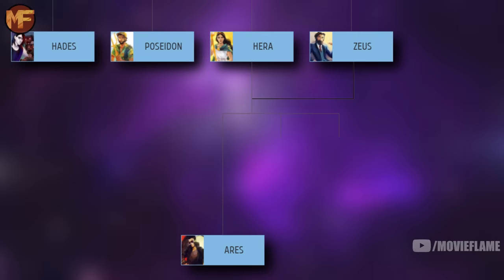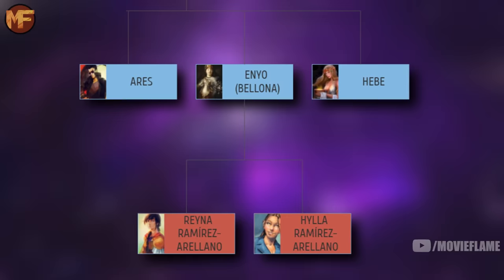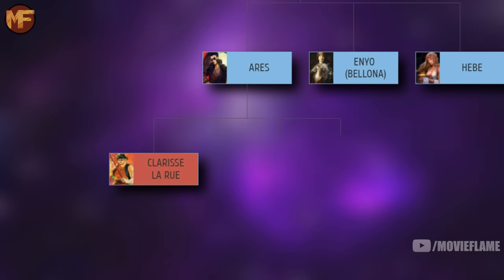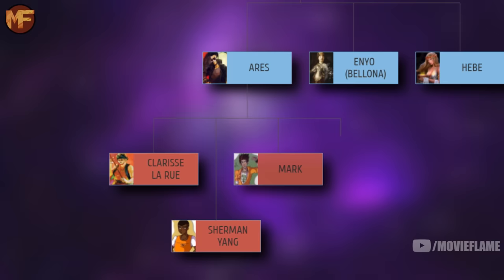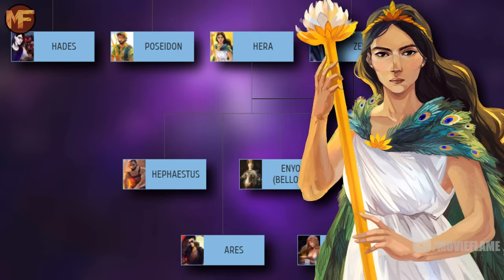Looking throughout these siblings, we have quite a bit more family-on-family action, as Hera and Zeus got married and together had three kids: Ares the god of war, Enyo (the Greek form of Bellona), and Hebe the goddess of youthfulness. Enyo, or Bellona, connects us to her daughters Hylla and Reyna Ramírez-Arellano. Hebe connects her demigod son Paolo Montes from the Trials of Apollo series. Ares connects us to Clarisse LaRue, a fan favorite; Sherman Yang, who took Clarisse's spot as head counselor during the Trials of Apollo; Mark, a smaller Ares cabin character; and Frank Zhang, another Prophecy of Seven demigod — technically his dad is Mars, but that's just the Roman version of Ares.